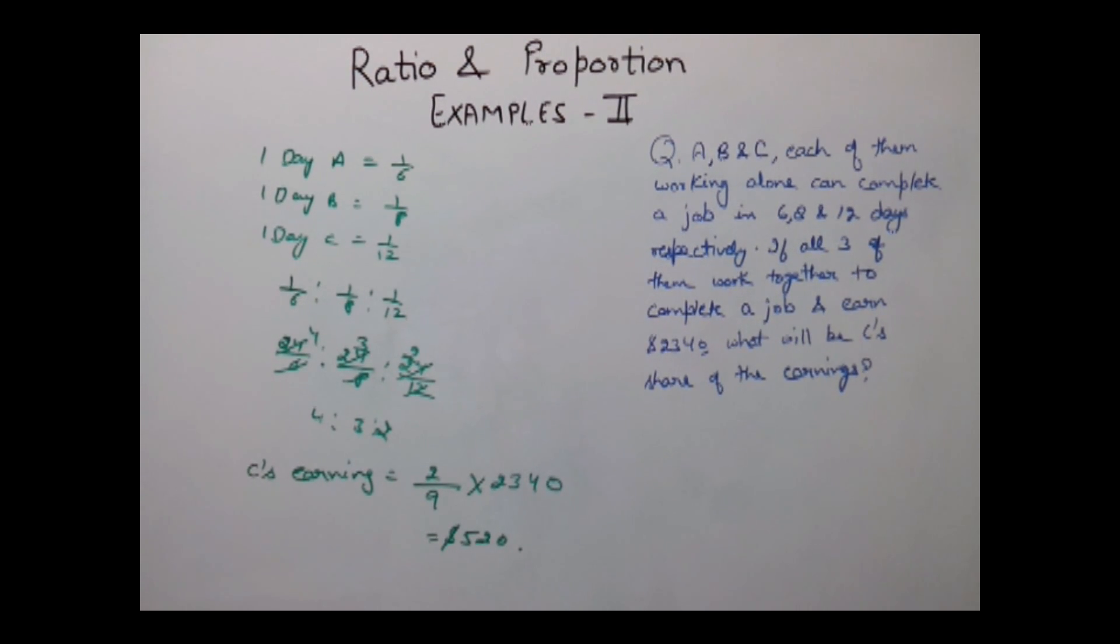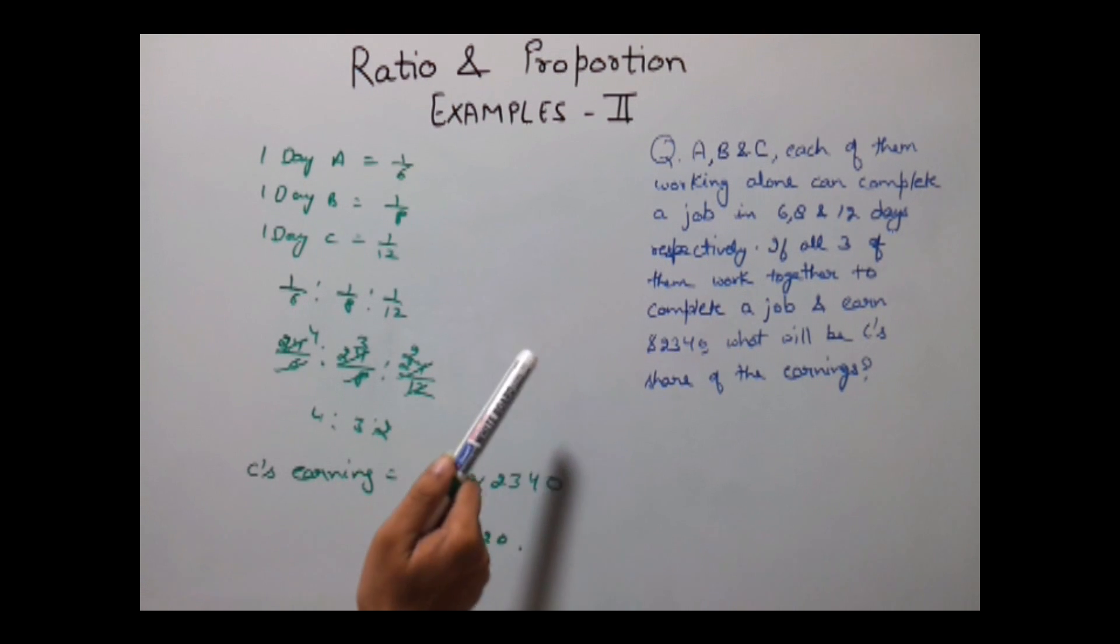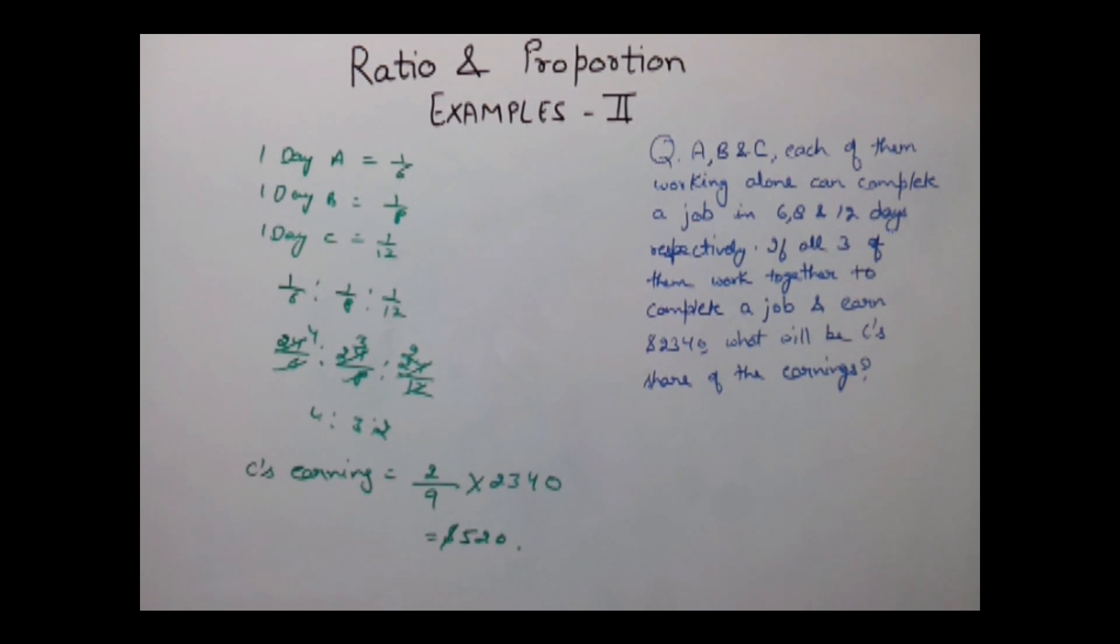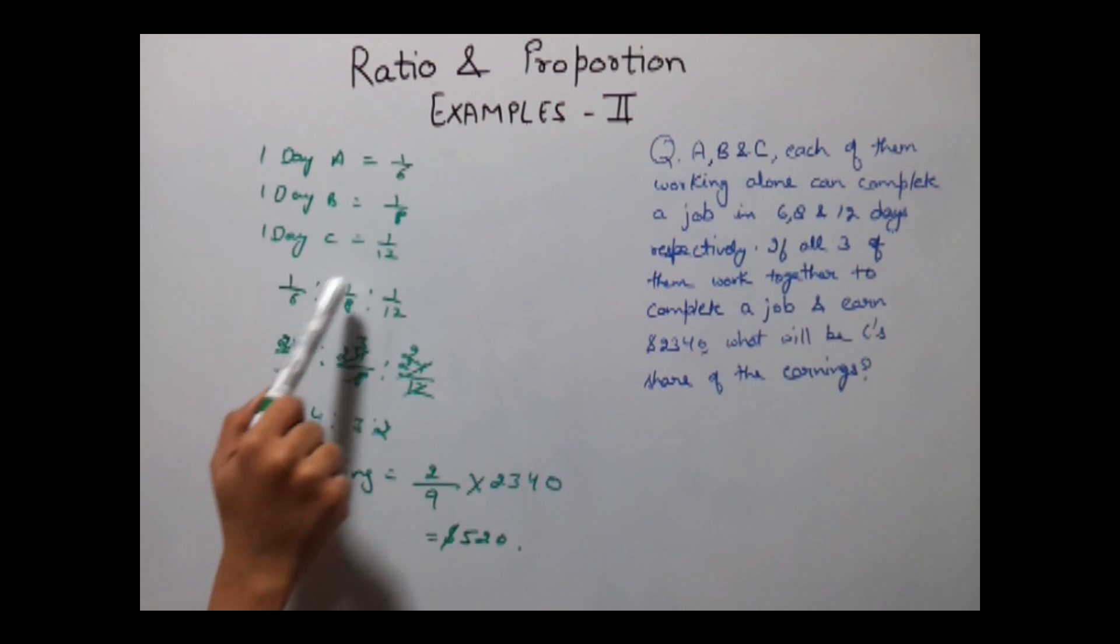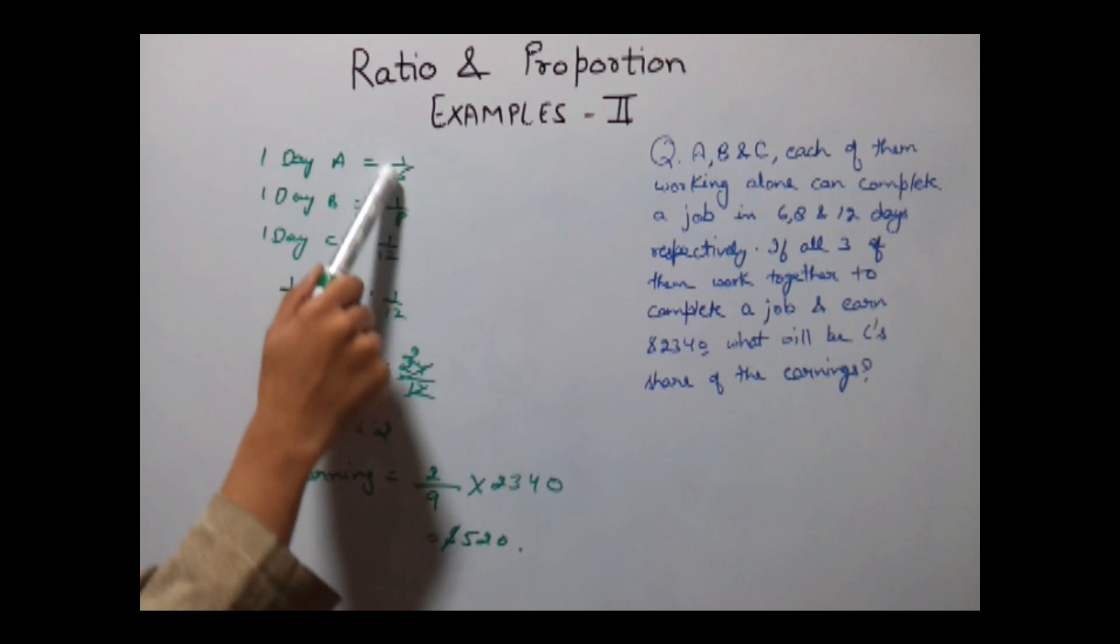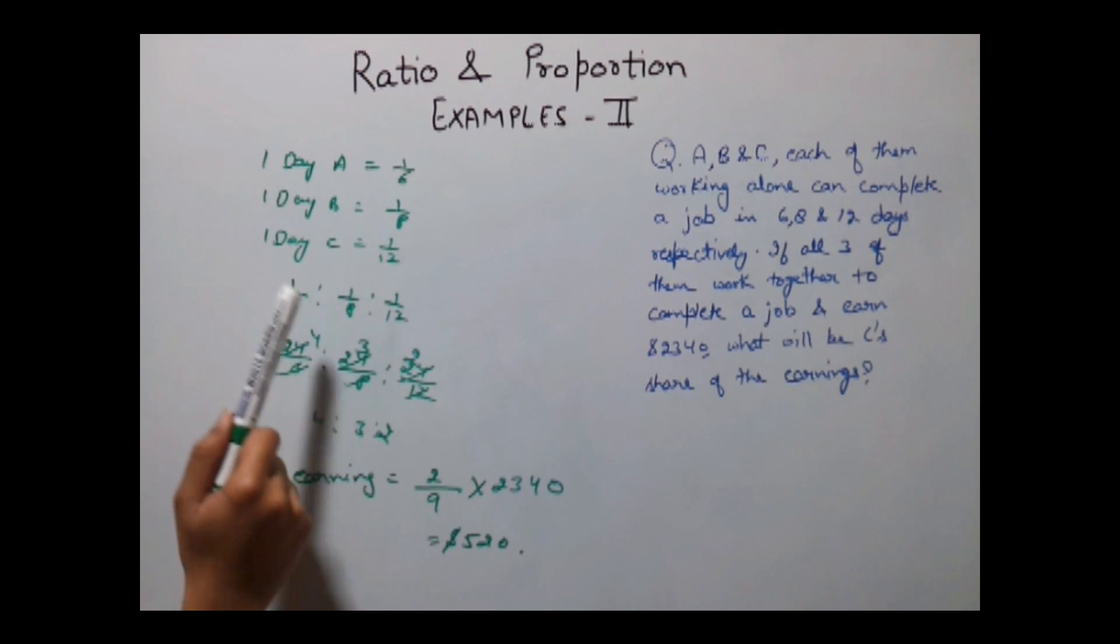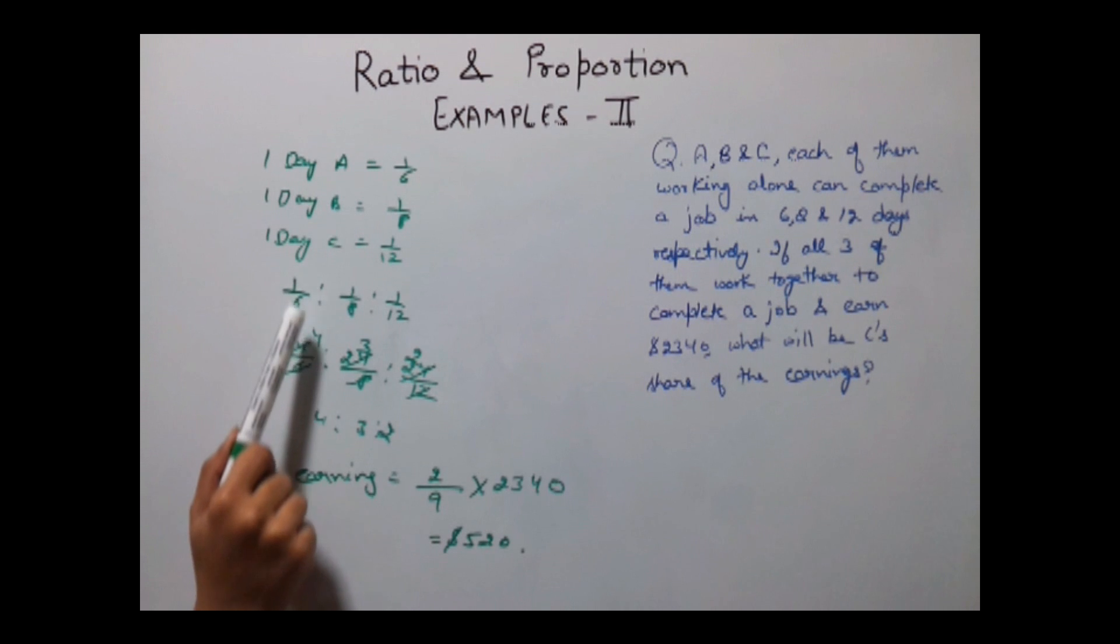Remember what we have actually done in this question is that they have given their total working capacity and how much time they take in completing their work. We have found out their one day work so that a ratio can be created.